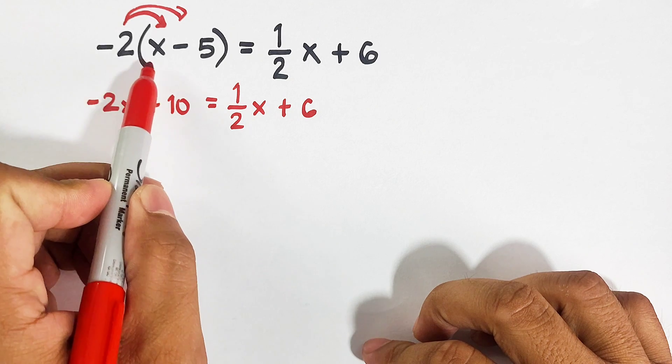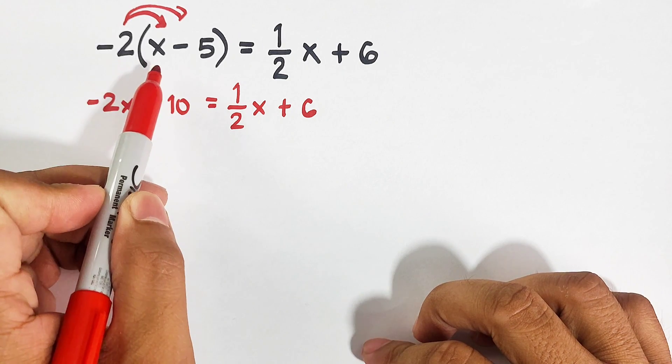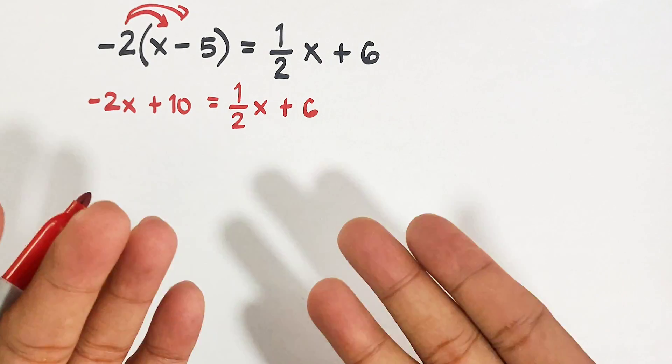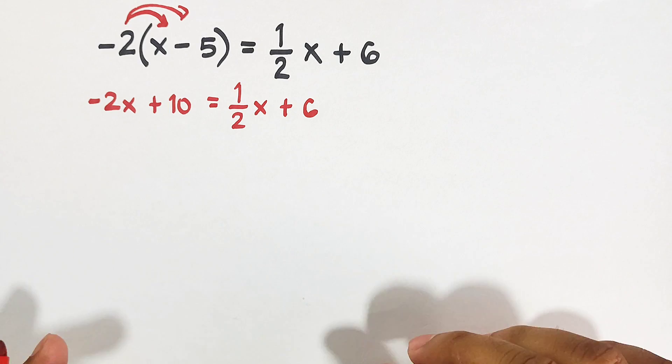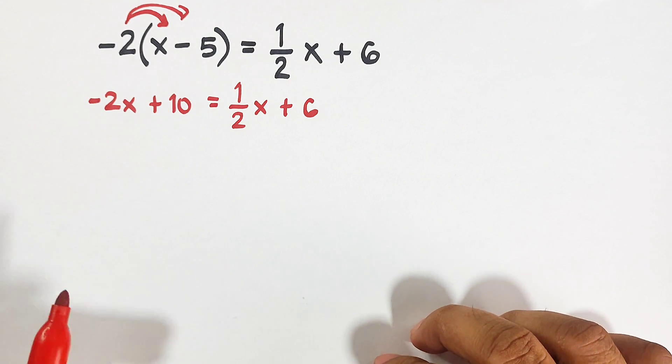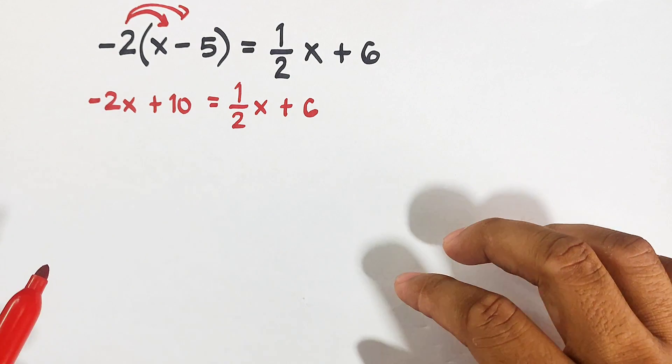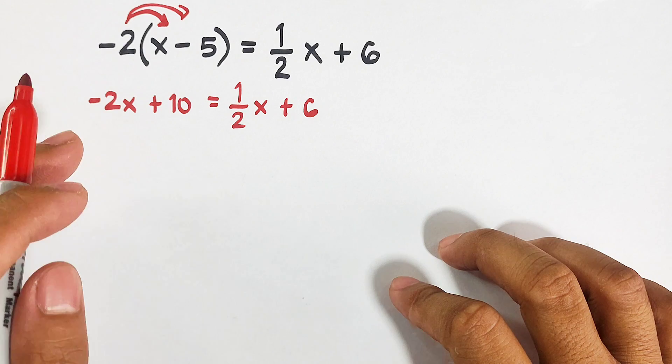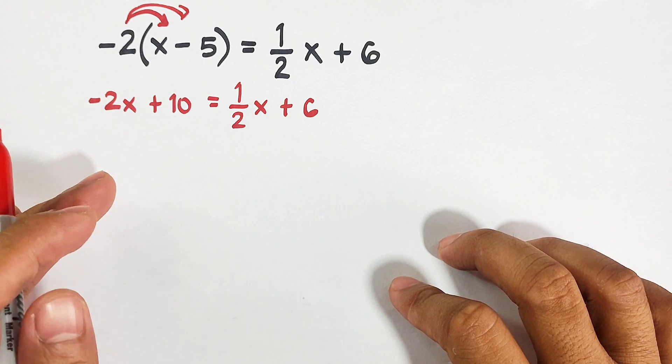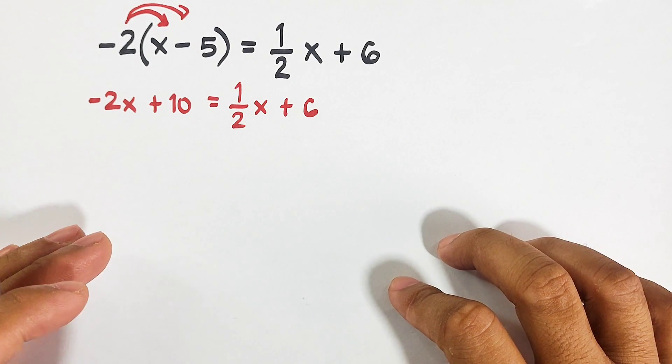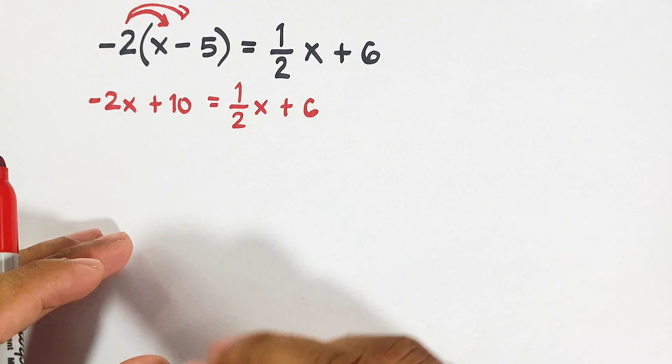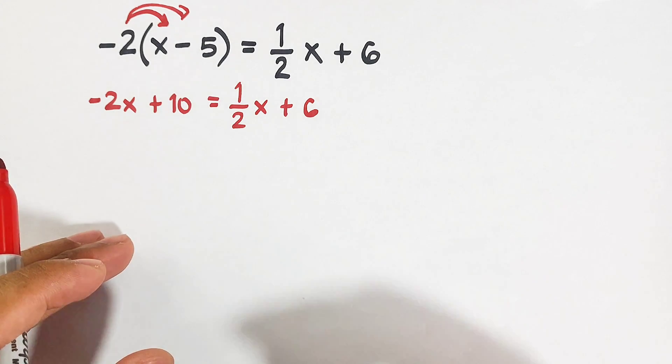After using the distributive property to eliminate the parenthesis, what's next is that we will isolate the variables and the constants. Our plan is that we will isolate all the variable x or terms with the variable x on the left side of the equation and all the constants like 10 and 6 to the other side of the equation.